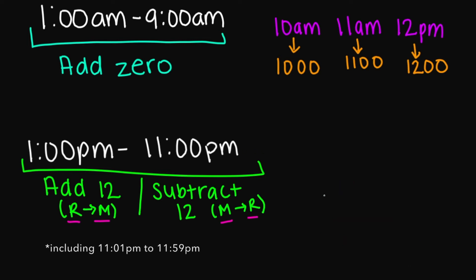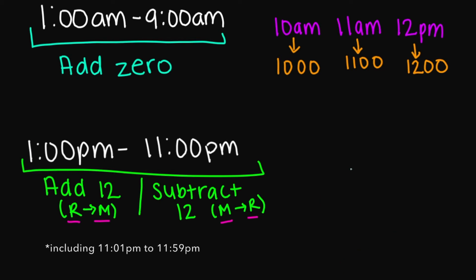What about 1300 hours? I'm going to subtract 12 — this is going to be 1 p.m. regular time. And then what about 1400 hours? Subtract 12 — this is going to be 2 p.m. regular time.